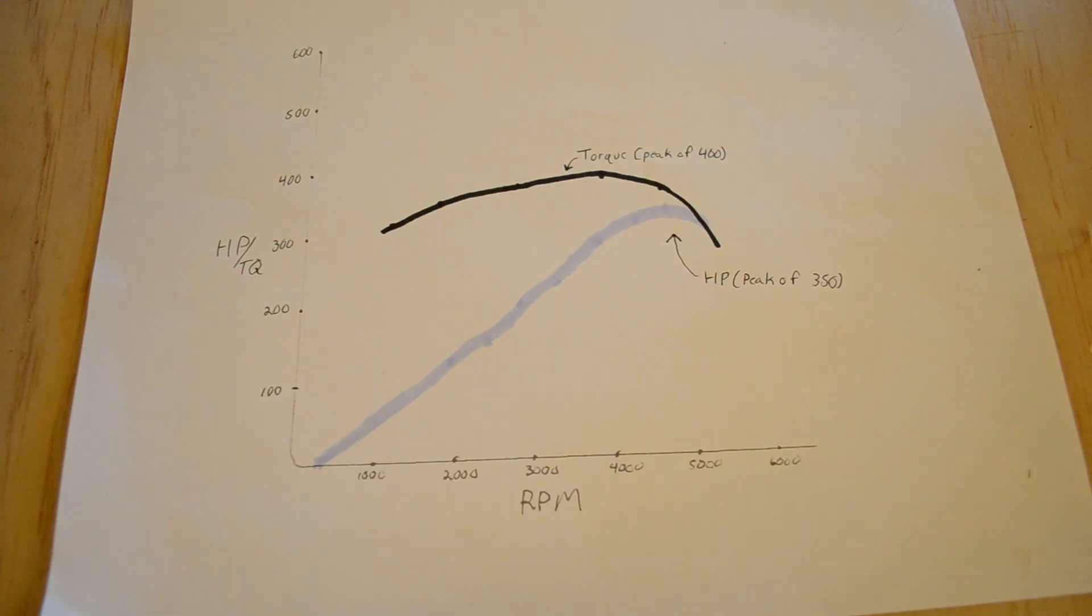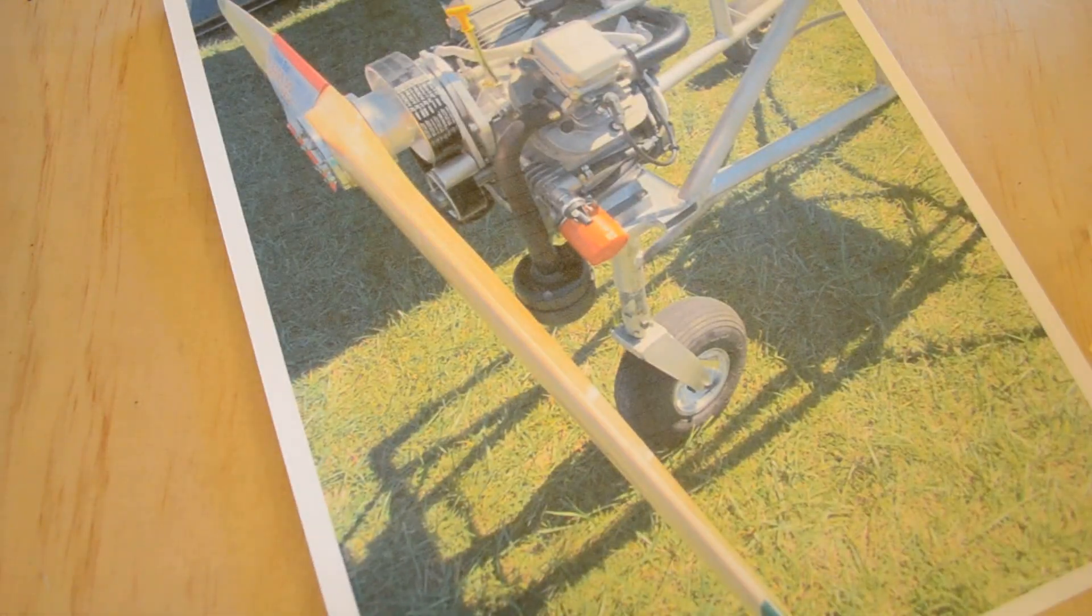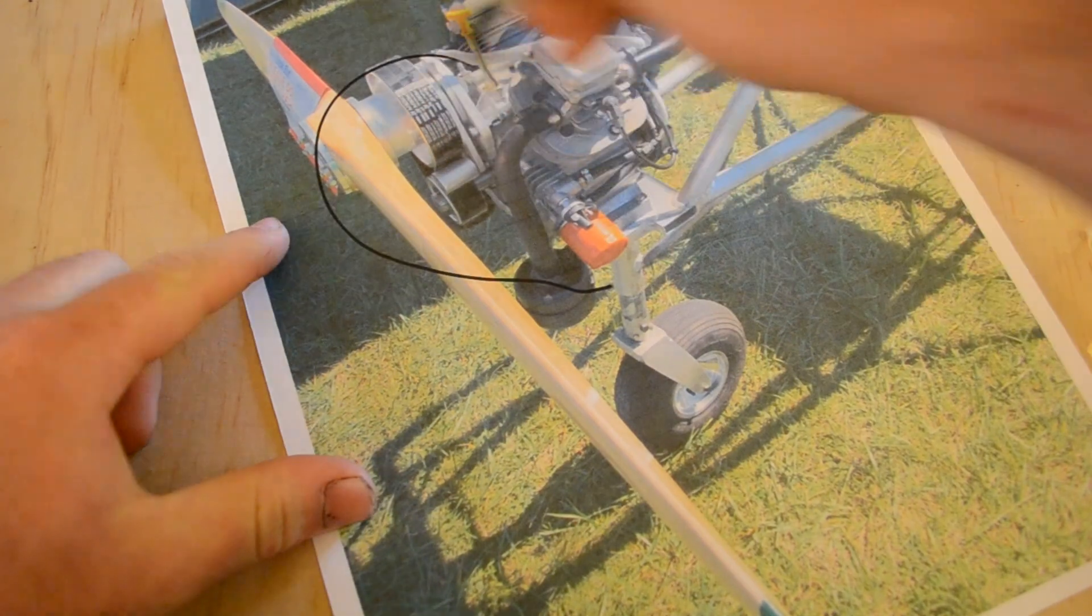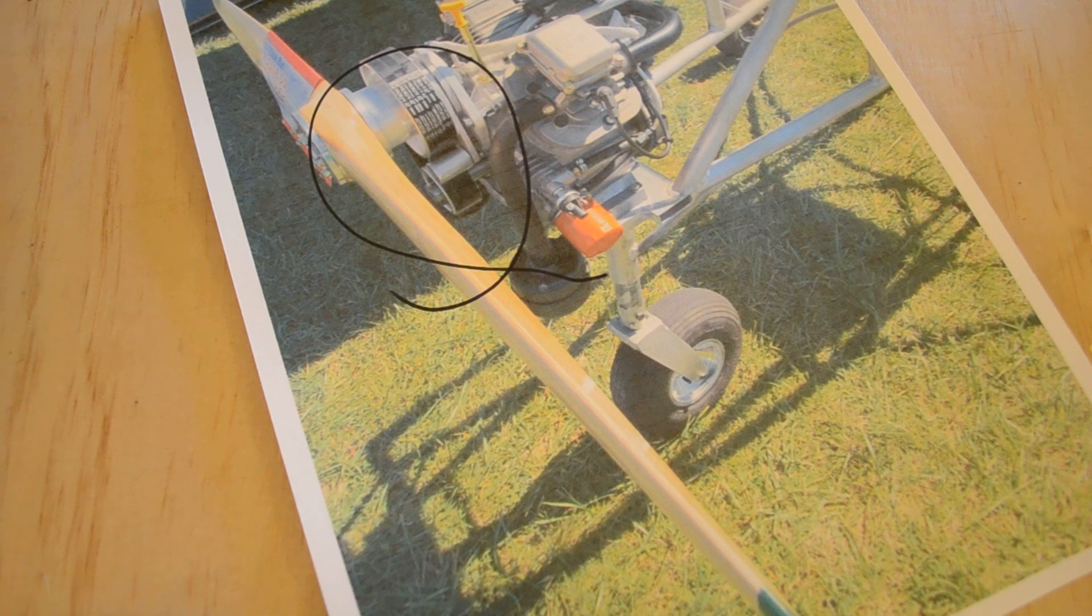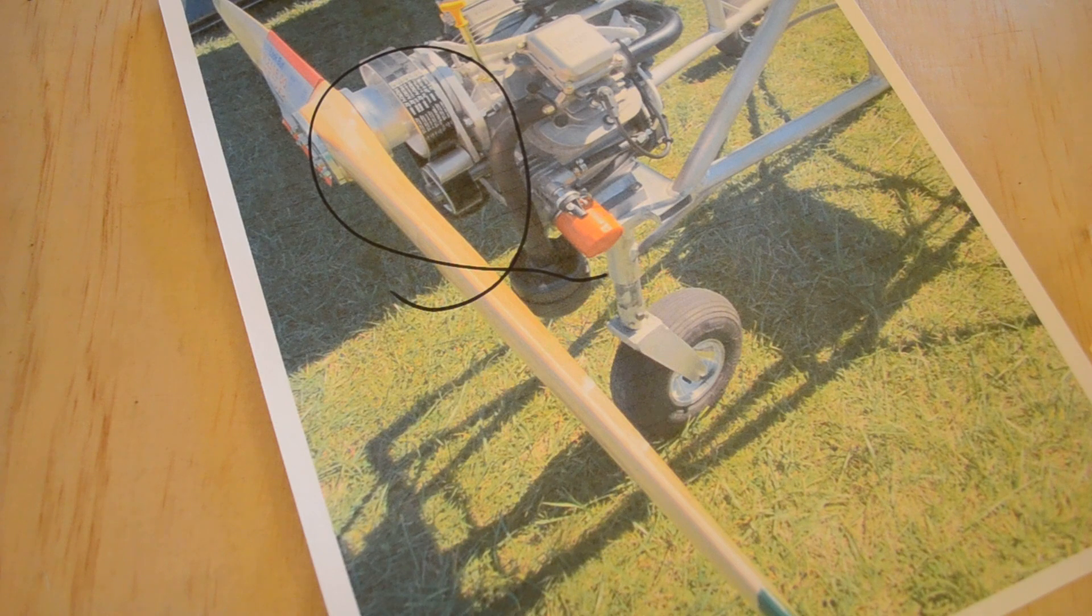One solution that a lot of people use is a Prop Speed Reduction Unit, or a PSRU. This is basically just a set of gears or pulleys that exchanges RPM for torque. I'd rather not use one of these for a couple of reasons. For one, they're usually pretty heavy, they can weigh up to 100 pounds. They're also pretty expensive because they usually have to be custom-made, so I'd much rather use direct drive.